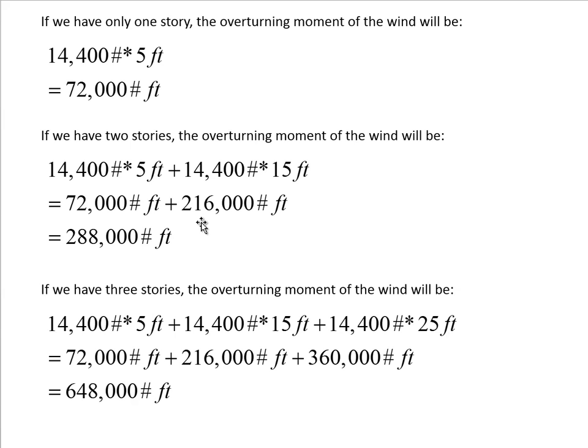Typically wind gets stronger as we go up the building and we have a formula for dealing with that, but for the moment we're keeping this simple — we've assumed the same 20 pounds per square foot overpressure on the windward side and 10 pounds per square foot suction on the leeward side all the way up. It's going to be substantially less at the lower floors and a bit more at the upper floors, but we're taking this as a fairly conservative number. With three stories we have 14,400 × 5 ft, 14,400 × 15 ft, and 14,400 × 25 ft, which sum to 648,000 pound-feet.